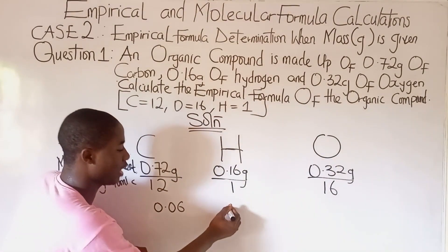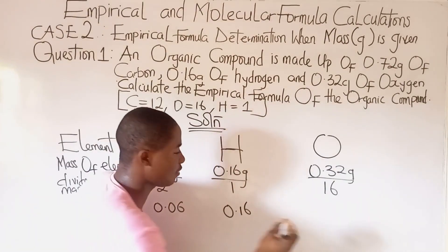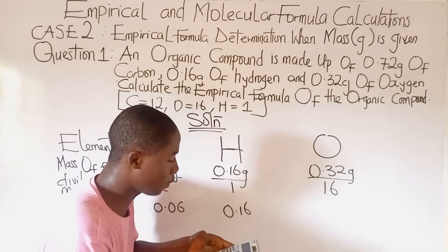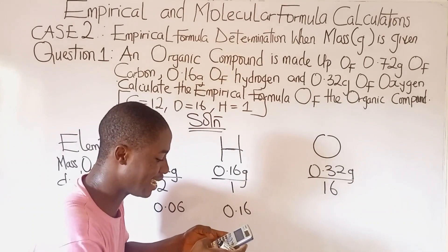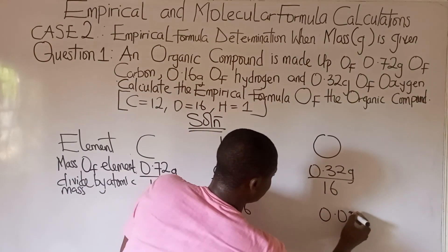Now here, when you divide, I think we are having same number which is 0.16. And lastly, what are we having here? Let's press the calculator, 0.32 over 16. That is 0.02. So here is 0.02.